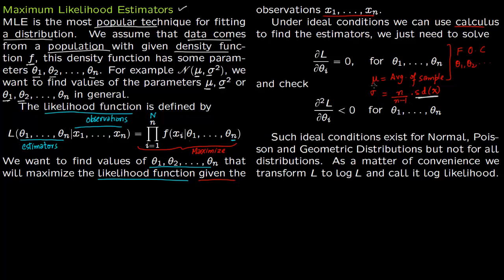You take the standard deviation of the sample and multiply by n over n-minus-1 to get the standard deviation of the actual population; sigma-squared is the variance. You then check the second-order conditions — that the second derivative is less than zero for all parameters. Such ideal conditions exist for the normal distribution, Poisson distribution, and geometric distributions. For the Poisson distribution, the parameter lambda, called the intensity, is again just the mean of the sample. These distributions are commonly used precisely because you don't have to think hard about MLEs — you just take the mean and standard deviation.